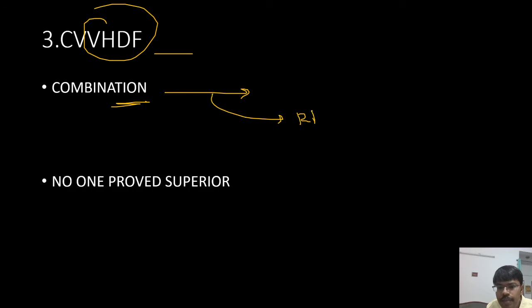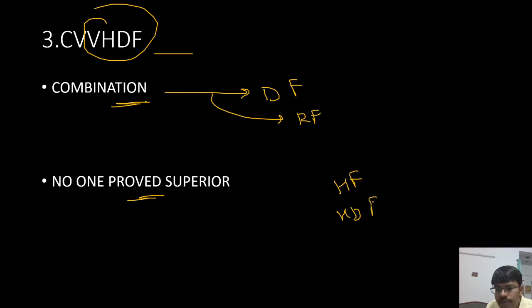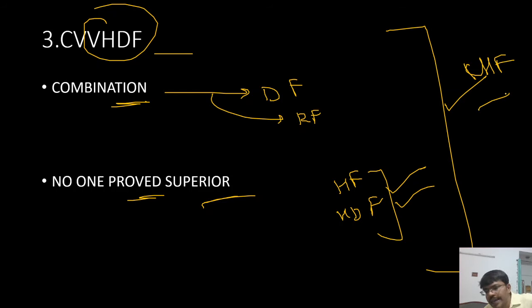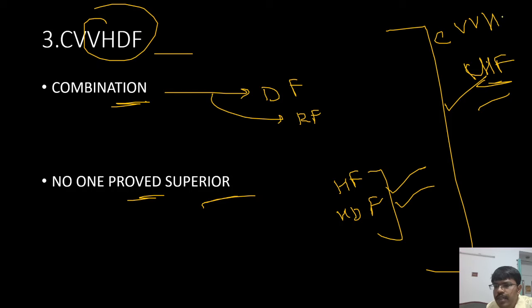In CVVHDF, both the previous approaches are combined: dialysate is used for diffusion and replacement fluid is used for hemofiltration-based convection, both occurring within a single filter. Regarding which modality to choose — no study has conclusively proved the superiority of one modality over another. However, in most ICUs and in current clinical practice, CVVHDF is preferred because both diffusion and convection occur simultaneously, providing better overall clearance.